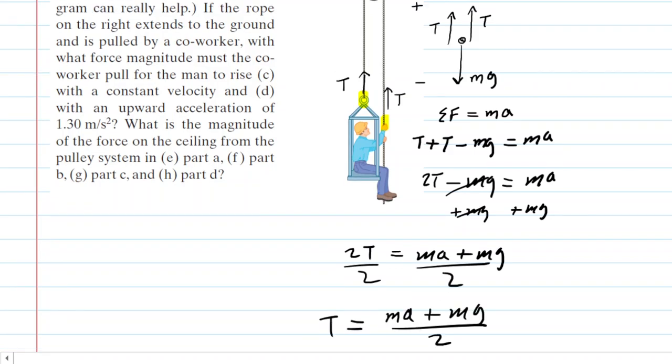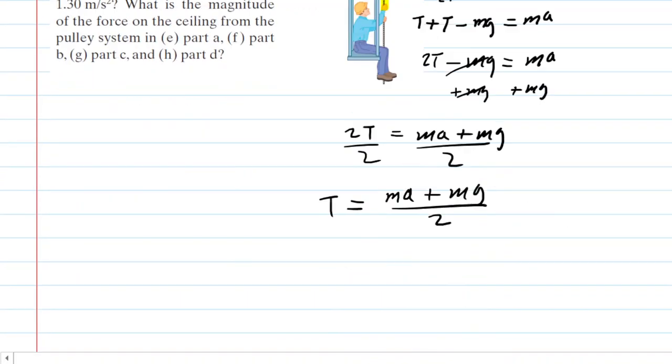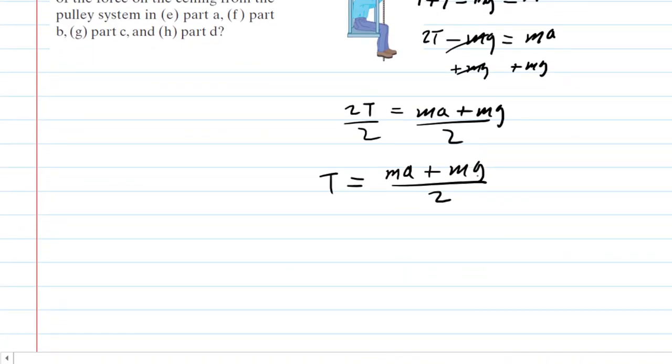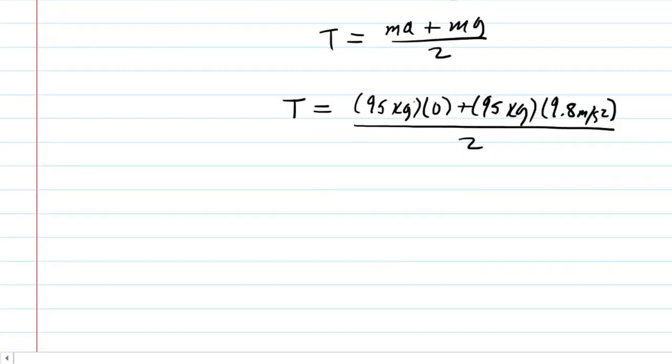And this shows us what the tension will equal. And in part A, if we go back up and look there, it says that the system is traveling with a constant velocity. So that means in part A, the acceleration is going to be zero. We also have the mass given to us of 95 kilograms. G is 9.8 meters per second squared. So let's plug in the known data. So when we punch this into our calculator and recognize that this term right here is zero, we will see that the tension in the rope, which is the same as the force magnitude that the man is pulling on the rope with, is about 466 newtons. So this is the correct answer to part A.